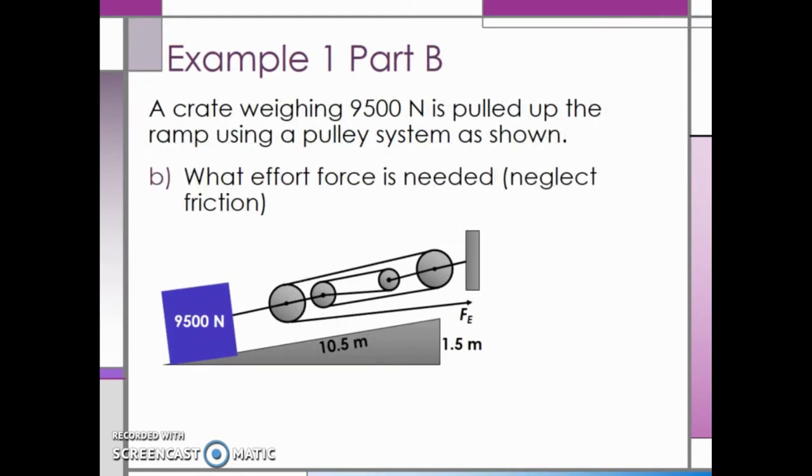Now we can solve part B. What is the effort force needed to pull this crate up the ramp, neglecting friction? Once again, we have to think back to the load, effort, and mechanical advantage equation circle. Since we want to find the effort force, we will cover that up and we are left with load force divided by mechanical advantage.